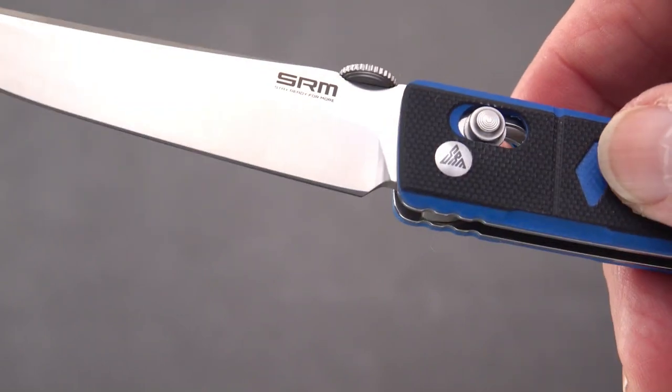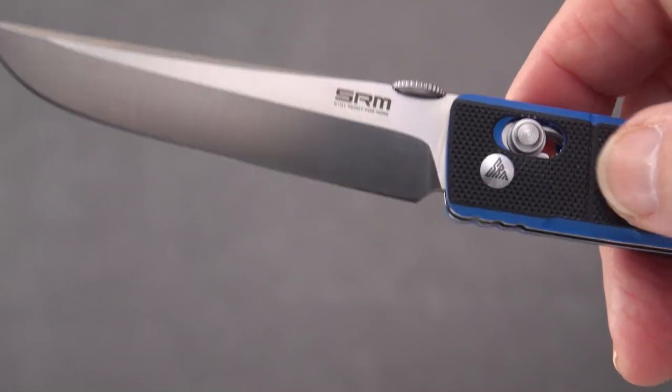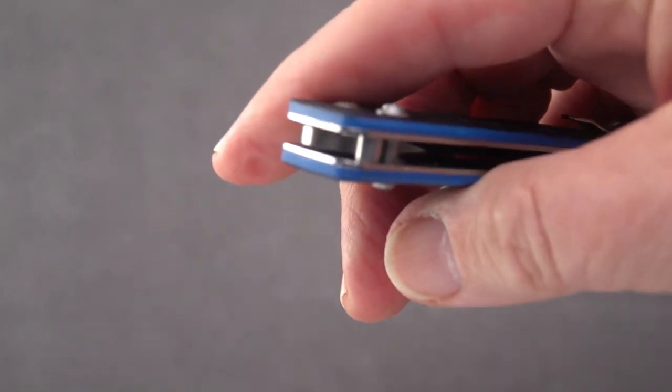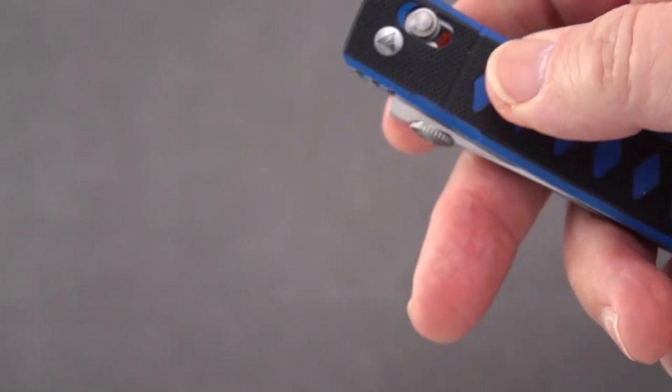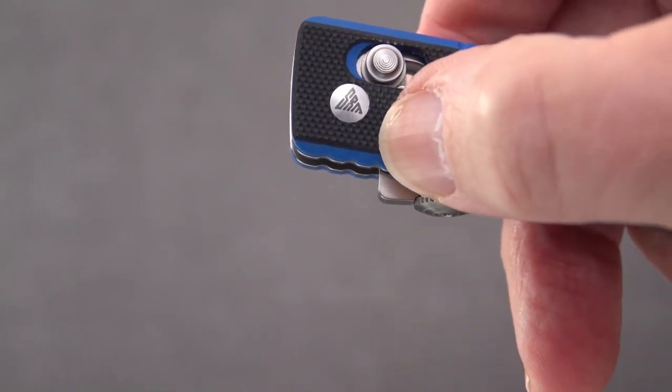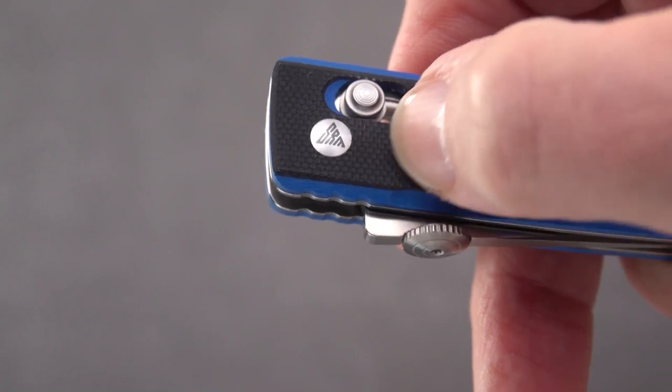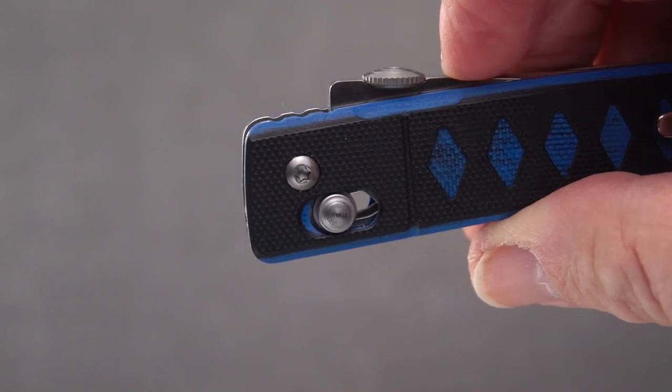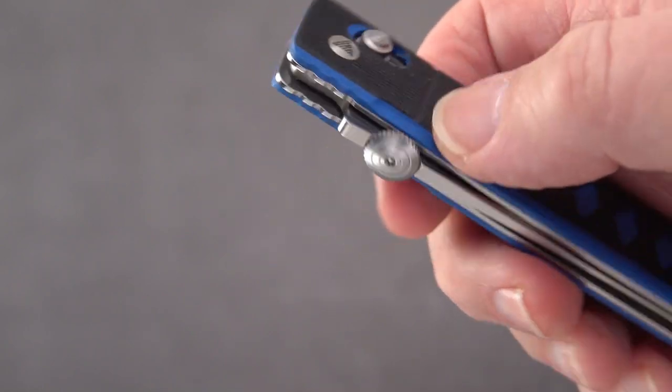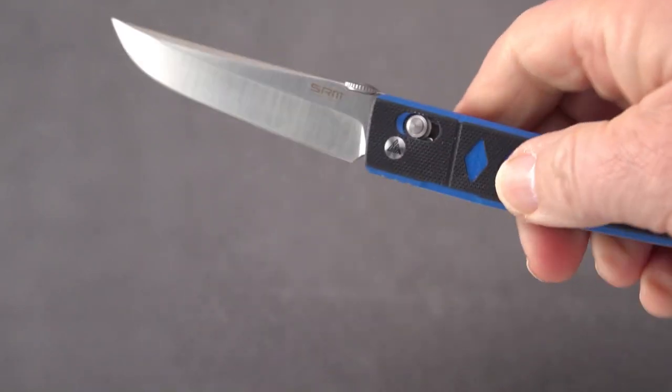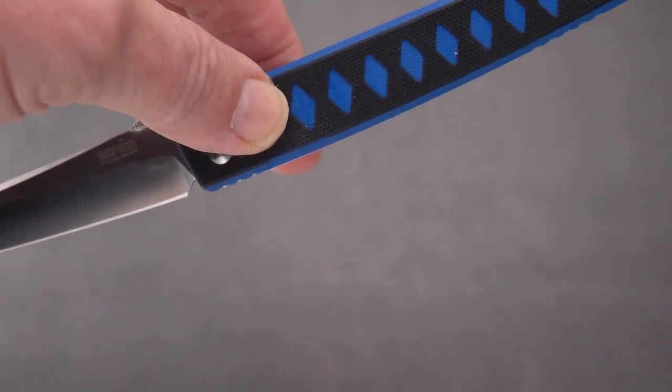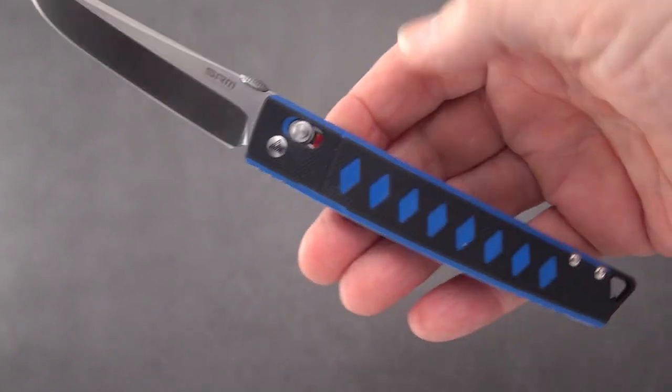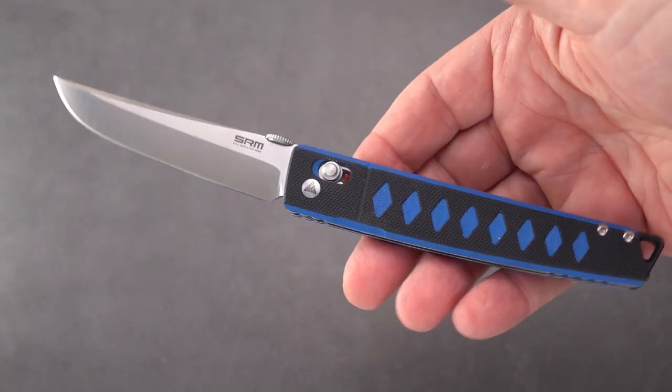This one, however, has a locking bar or axis style lock. Very smooth. Appears to be on bearings, although I haven't taken it apart. There is the SRM logo on the pivot and what appears to be a T8 on the other side. We have a disc for opening on top. And I should back out a little. And that's what we have.